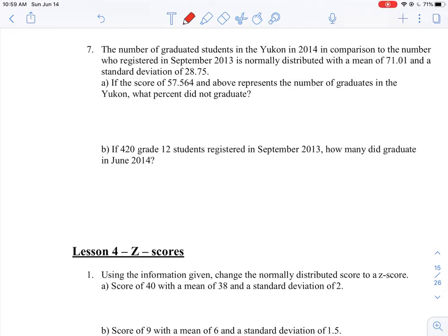Let's take a look at question number seven in lesson three. This is in unit seven on the stats unit. The number of graduated students in the Yukon in 2014 in comparison to the number who registered in 2013 is normally distributed with a mean of 71.01 and a standard deviation of 28.75.